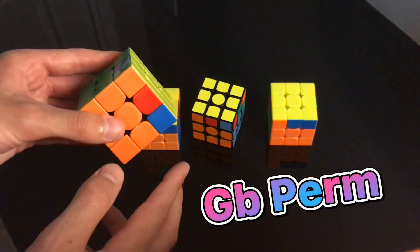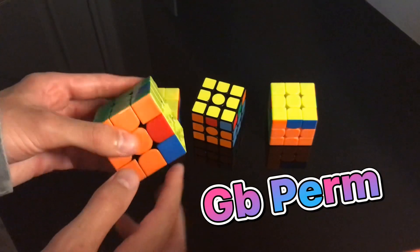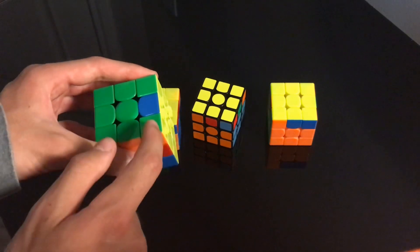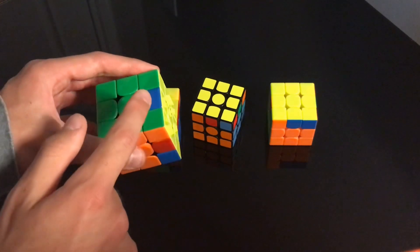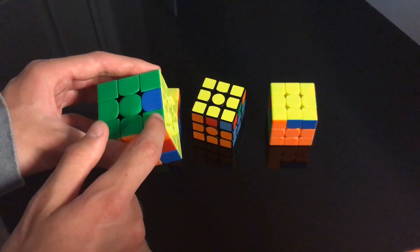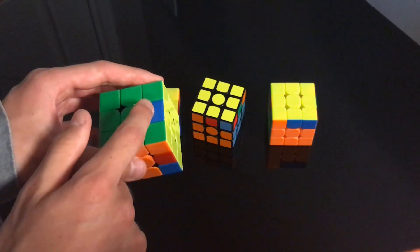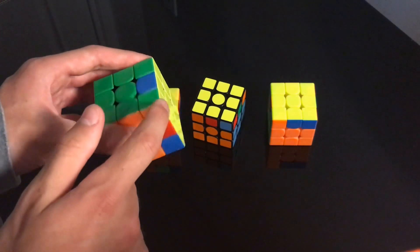So starting off with the GB perm, where the block is right here, we can look at the headlights and the edge. And we're going to see if the edge is opposite to the headlights. So green is opposite of blue. So we know that it's opposite.